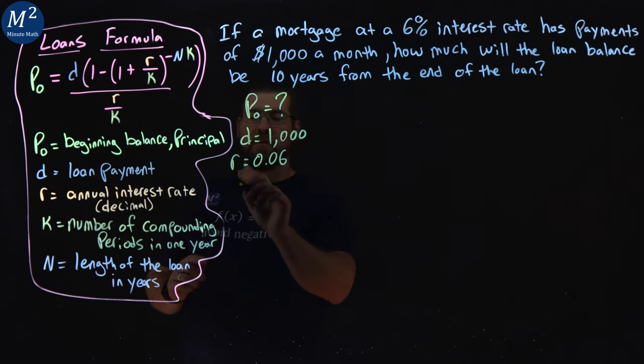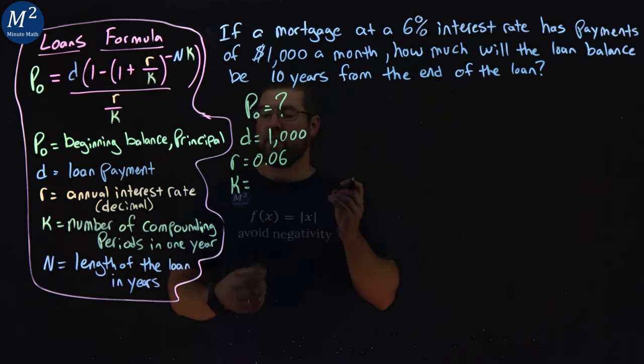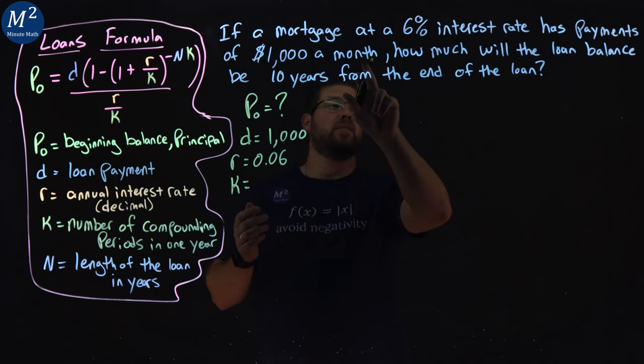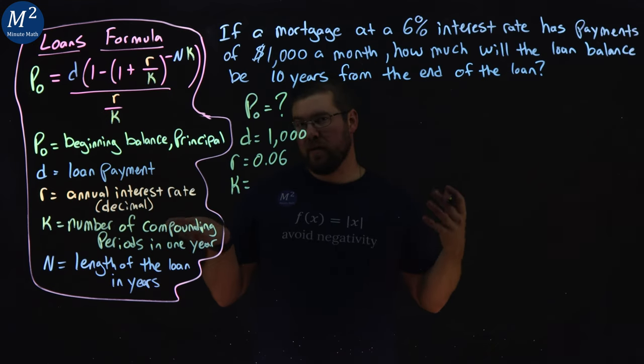Our K value is the number of compounding periods in a year, which is going to be monthly. It's per month, so it's going to be 12 months in a year.